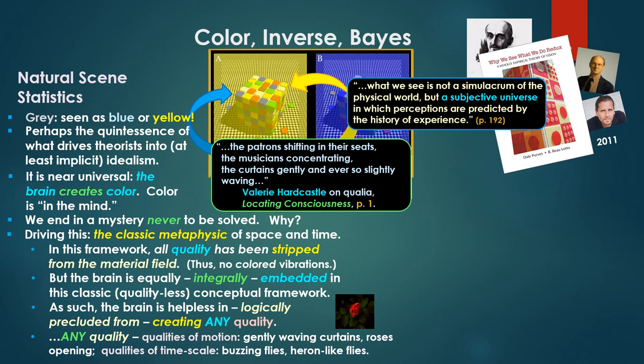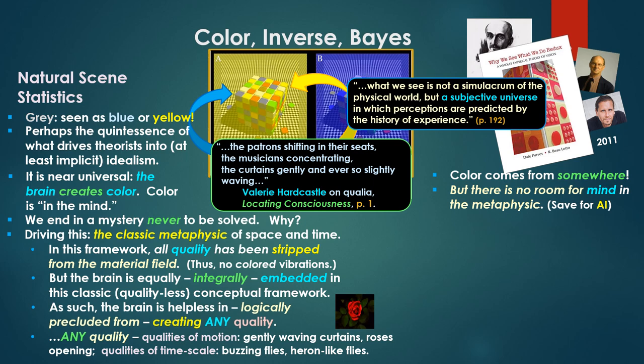Difficulty. The brain is equally integrally embedded in this classic qualityless stripped conceptual framework. As such, the brain too is helpless and logically precluded from creating any quality. This includes qualities of motion. Remember Valerie Hardcastle's description of qualia: the patrons shifting in their seats, the musicians concentrating, the curtains gently and ever so slightly waving. So no quality, any quality of motion, that's been stripped. But color comes from somewhere.